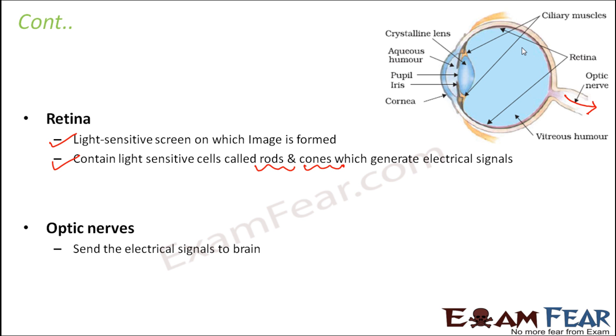Then come the optic nerves, whose job is to connect the eye with the brain. They send the electrical signals produced by the cells on the retina to the brain.